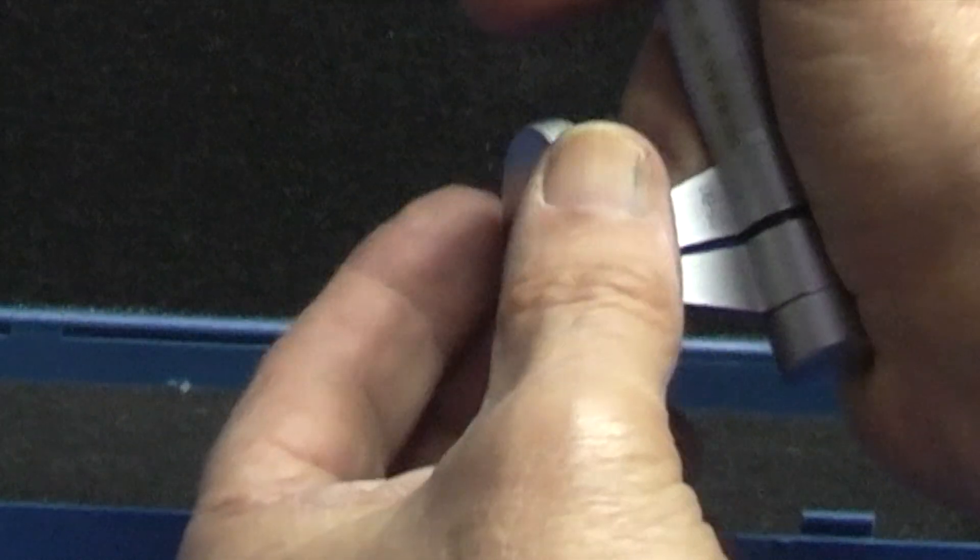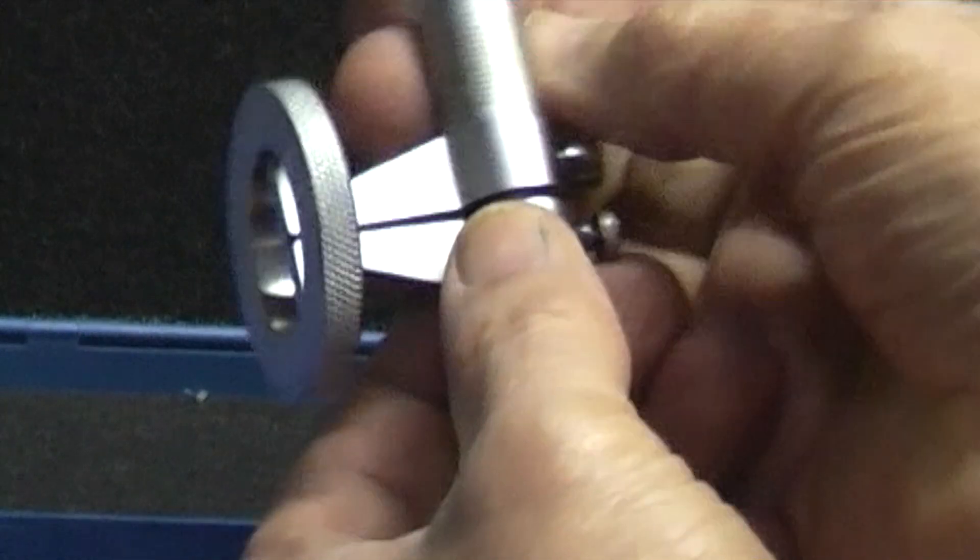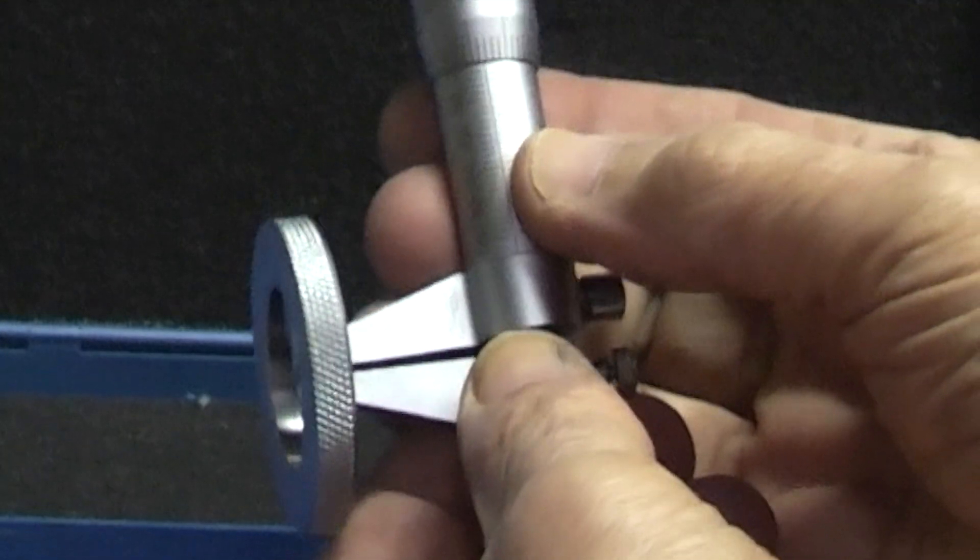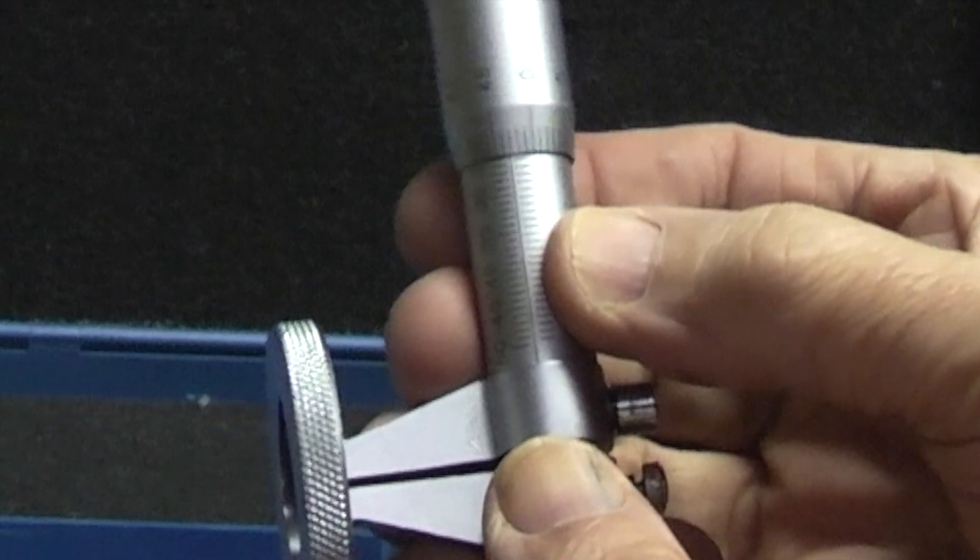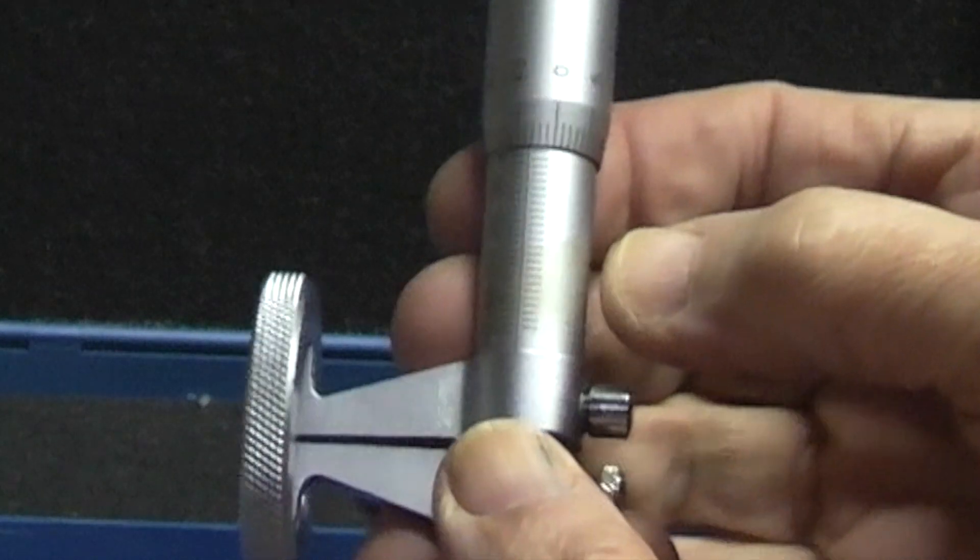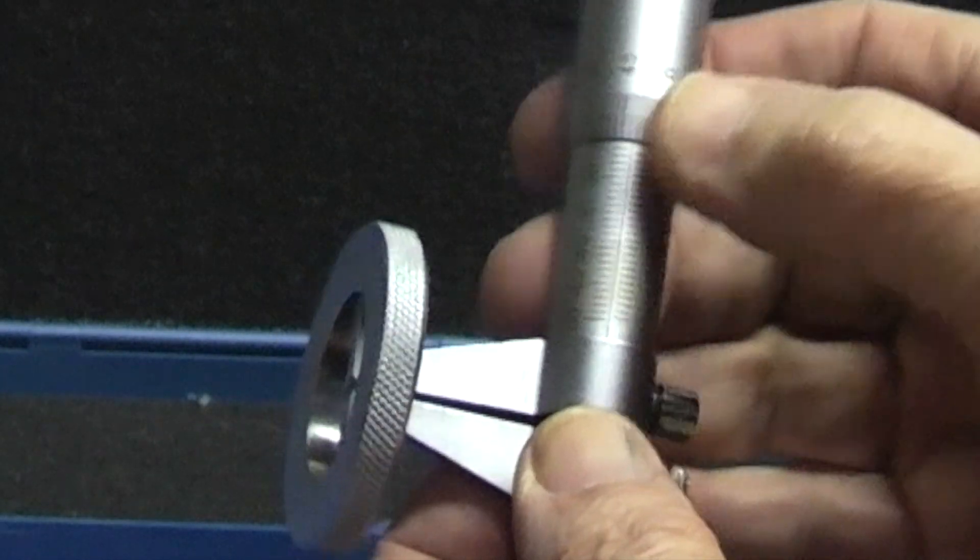I'll just put that on the ring gauge to get a nice feel. I'll look at the reading. You can see there a nice feel. The zero doesn't align with the line.